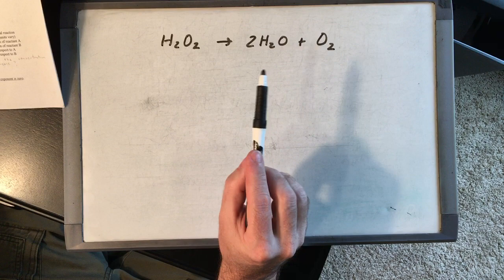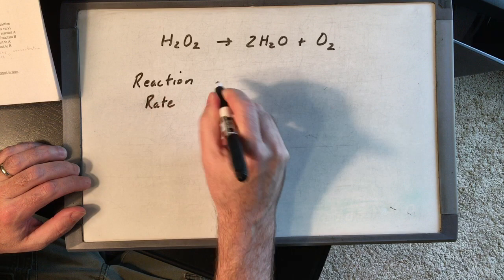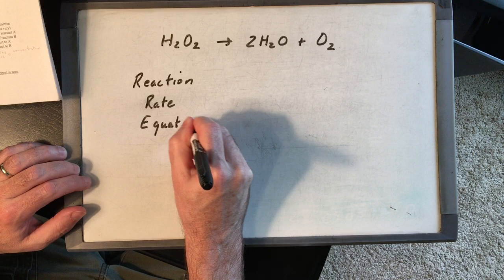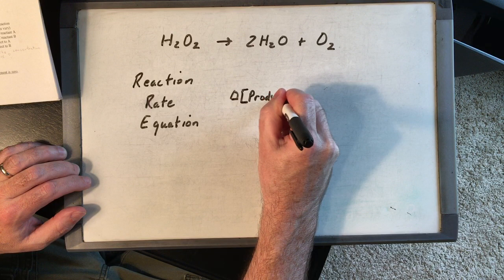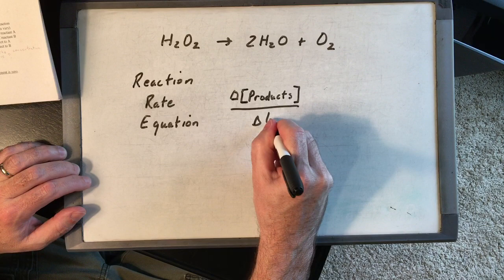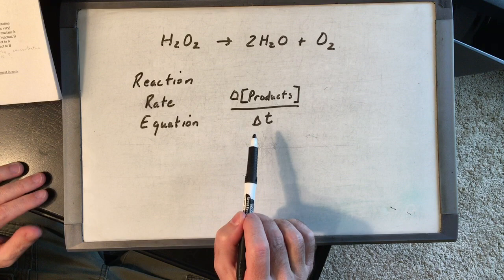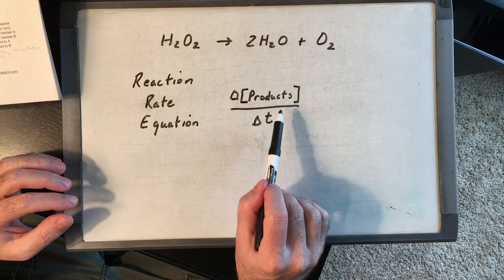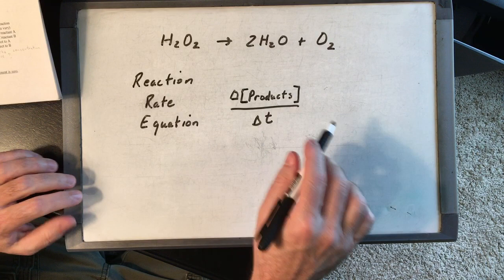Even if a reaction is spontaneous like this one, there's no value in running it if it doesn't proceed quickly enough. The reaction rate equation — delta concentration of products divided by change in time — is in your notes. It's a great way of giving a picture of what's happening: how fast are products made, how much is the concentration of the products increasing per second. We won't be using this formula in our math in this chapter.